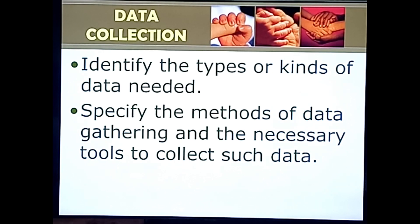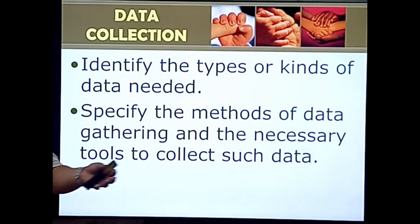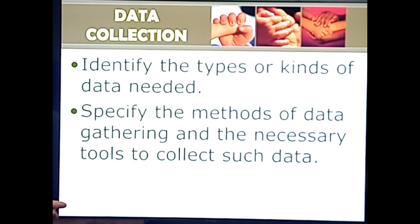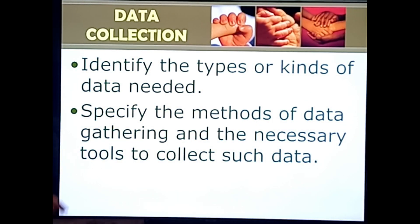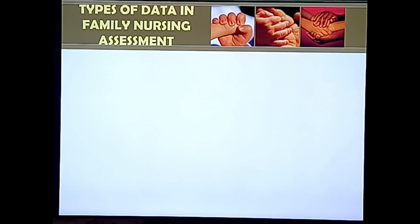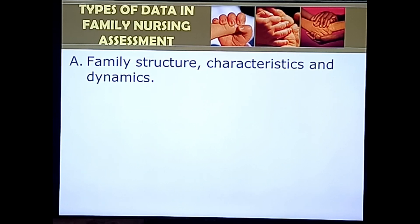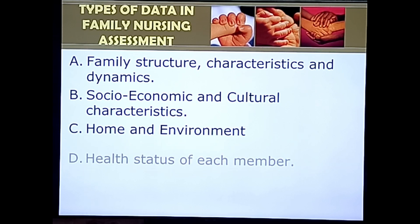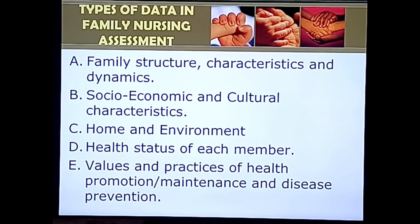To give a preview of data collection methods: it can be through interview — taking note of subjective data provided by the community — as well as observation, and the presence of diagnostic and laboratory tests. After data is collected, we categorize it by type: family structure and characteristics, socioeconomic and cultural characteristics, home and environment, health status of each member, and values, practices of health promotion, maintenance, and disease prevention.